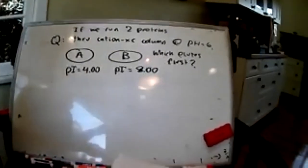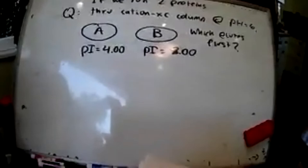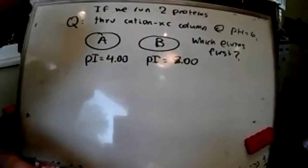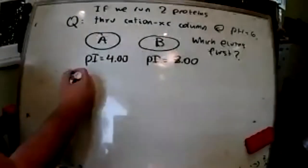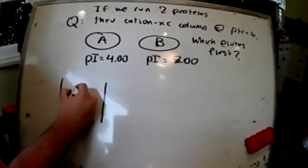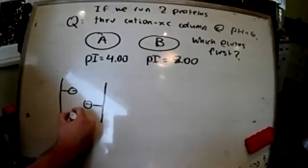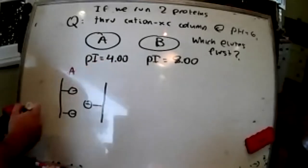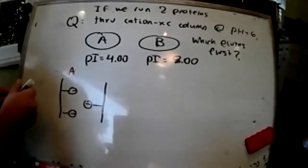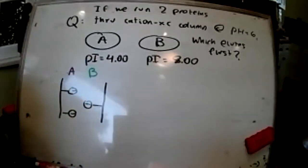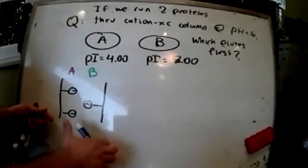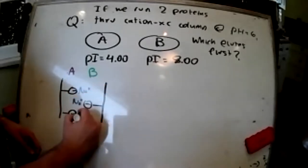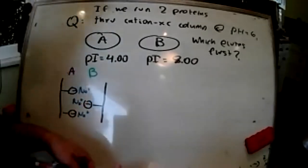For starters, when we talk about a cation exchange column—what is the charge of the column? Does that mean the column is positively charged or negatively charged? The column is negatively charged. We can draw some little beads in here. We have our two proteins A and B. Let's say our beads were being balanced out by sodium-plus counter ions. Then what's the next thing we need to know?